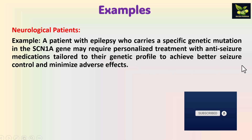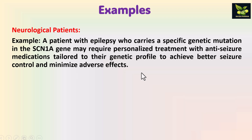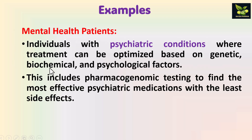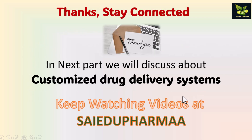Better seizure control and minimized adverse effects are achieved through this approach. For mental health patients — individuals who have psychiatric conditions — treatment can be optimized based on genetic, biochemical, and psychological factors. This includes pharmacogenomic testing to find the most effective psychiatric medications with the least side effects.